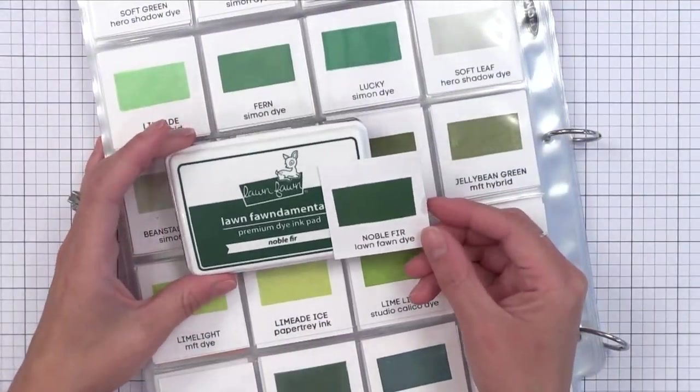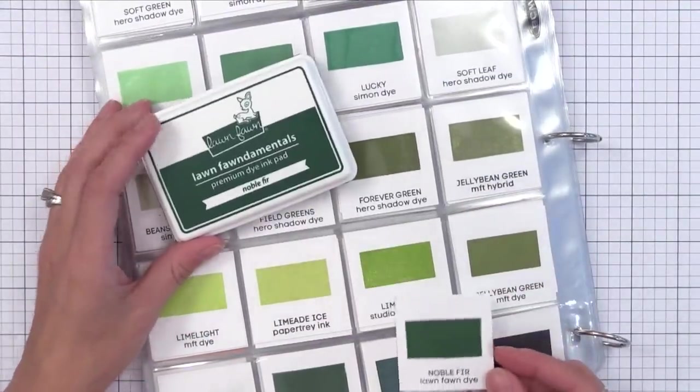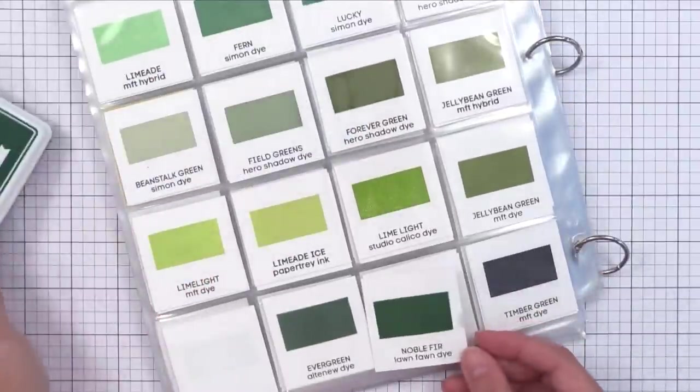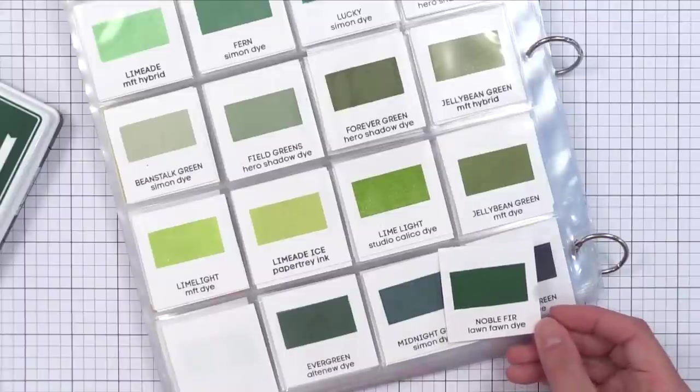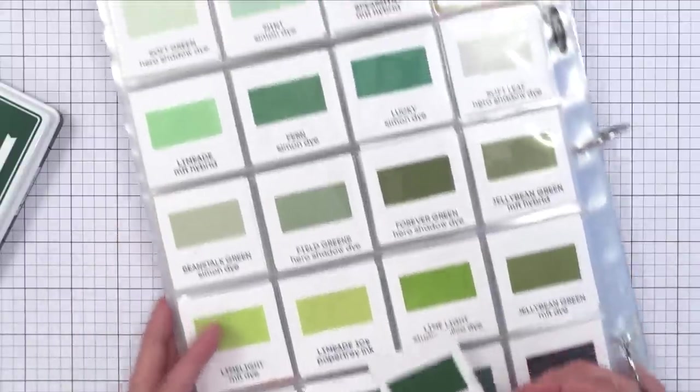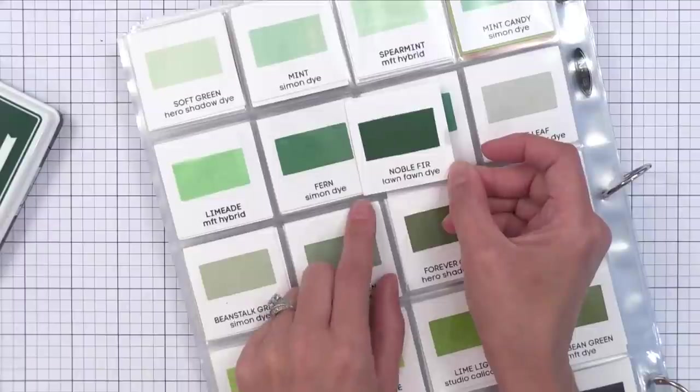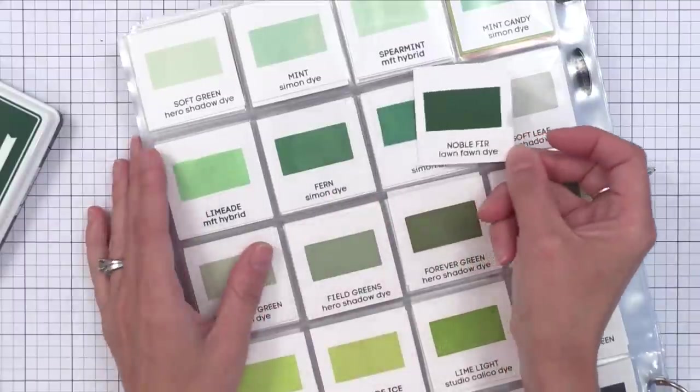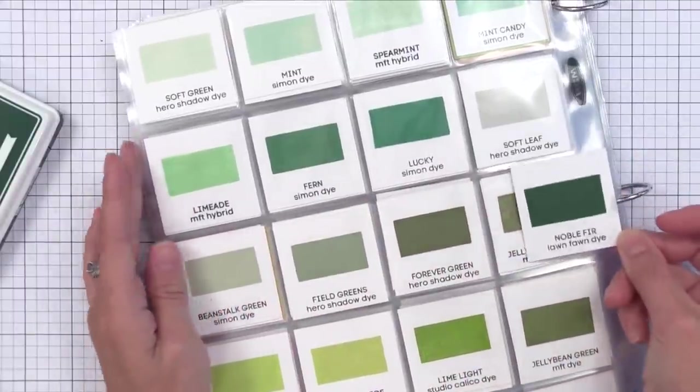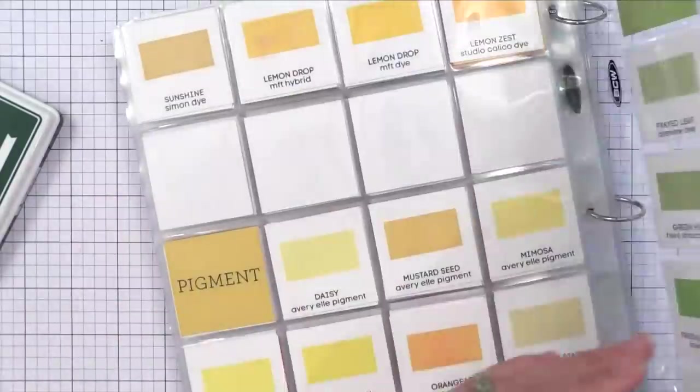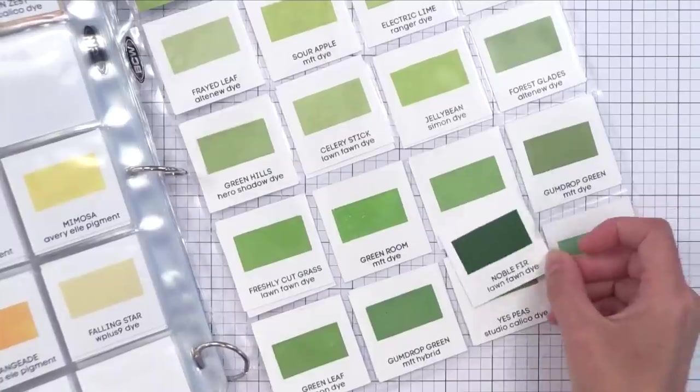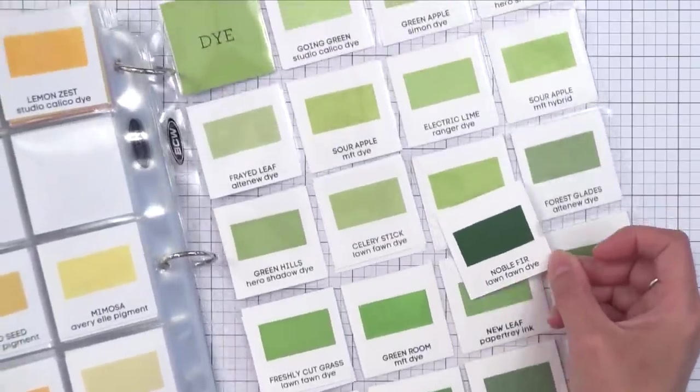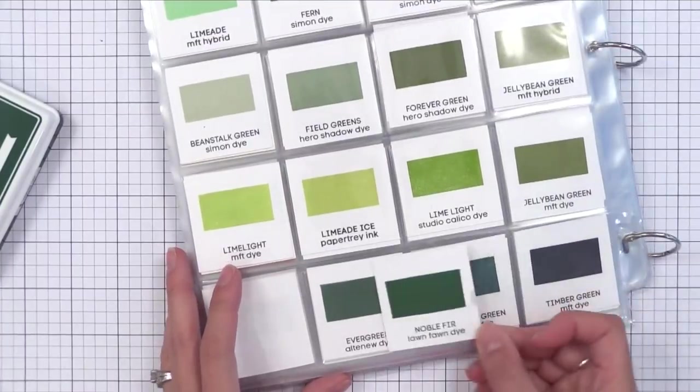Next we have the dark green noble fir. Now this is a true evergreen green, to me at least it is. It's like a good dark Christmas green. You can see it's more green than the others that I have here. My others seem to have a little bit more of a blue color to it. It teams up nicely with Fern from Simon Says Stamp. The other great thing about it is check out with a lot of my other light green inks. It teams up nicely with a lot of these different shades also. It seems to be a good dark green ink to match up with a lot of lighter green colors.